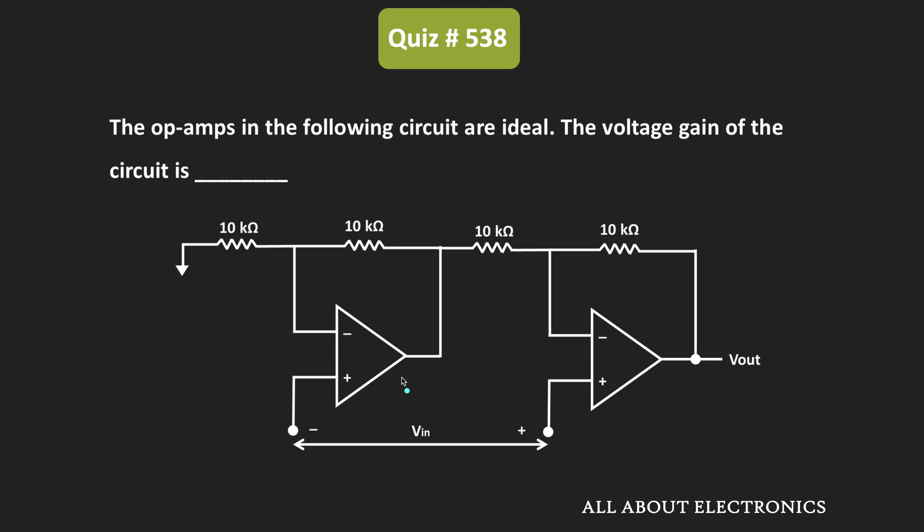Hey friends, welcome to the YouTube channel All About Electronics. In this question, we have been given an op-amp based circuit where all the op-amps are ideal. We have been asked to find the voltage gain of the given circuit.